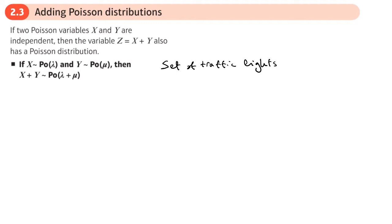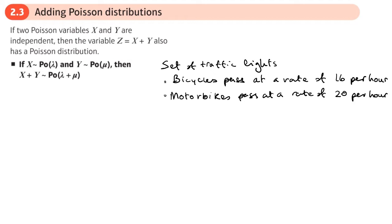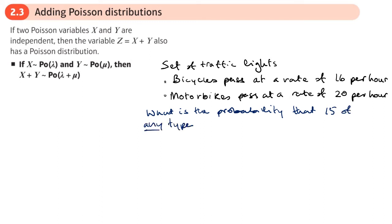Bicycles pass these traffic lights at a rate of 16 per hour. Motorbikes pass at a rate of 20 per hour. The question is: what is the probability that exactly 15 of any type of bike pass?